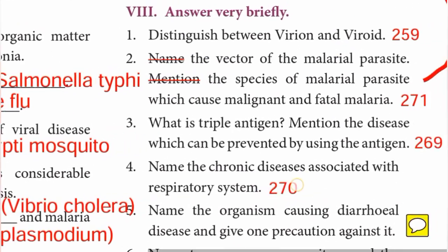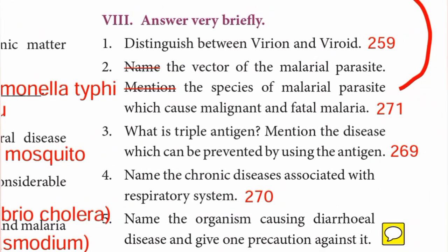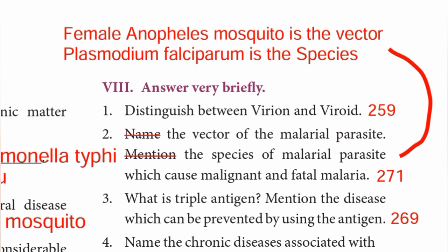Second question — name the vector of the malarial parasite and mention the species. The vector is the female Anopheles mosquito. The species of malarial parasite is Plasmodium falciparum, which causes malignant and fatal malaria.